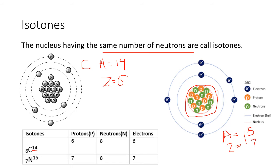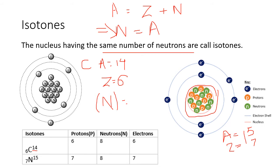To find the number of neutrons, we use: neutrons = mass number minus atomic number. For carbon-14: neutrons = 14 − 6 = 8. For nitrogen-15: neutrons = 15 − 7 = 8. Both carbon-14 and nitrogen-15 have eight neutrons each, so they are examples of isotones — nuclei with the same number of neutrons.